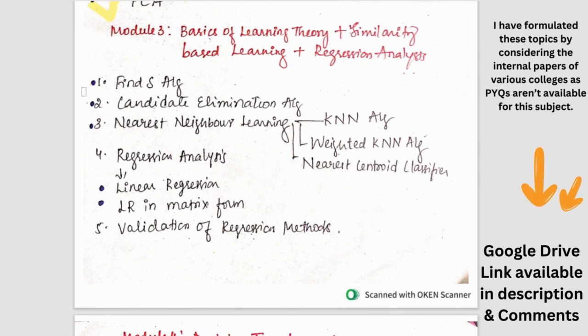Moving on to the third module. We have Find-S algorithm which is pretty easy. Along with the algorithm there will be a question. So Find-S and candidate elimination are pretty easy. So out of these two, one would be asked. And then nearest neighbor learning - in that KNN, weighted KNN and nearest centroid classifier - out of these three, one would be asked.